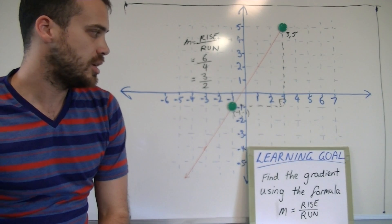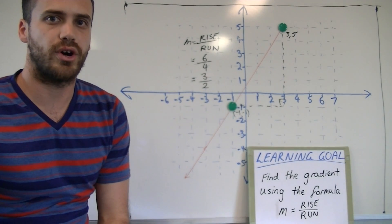That's it for that lesson. Using the formula, M equals rise over run to find the gradient.